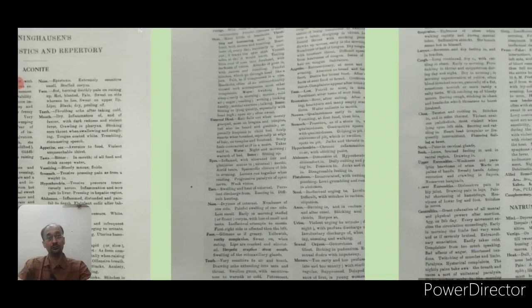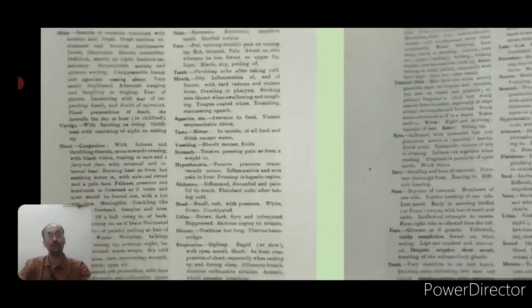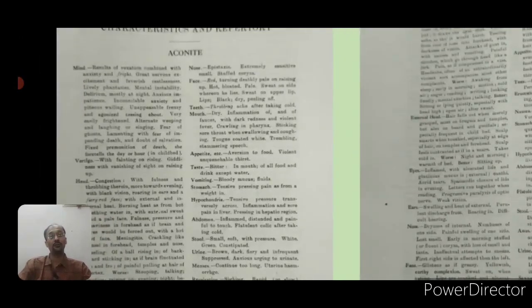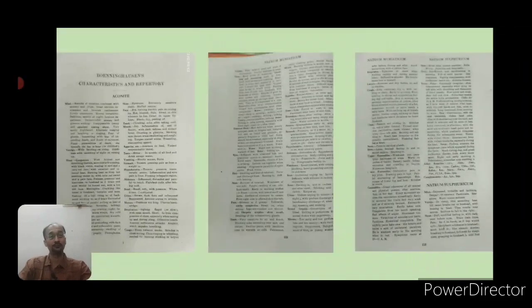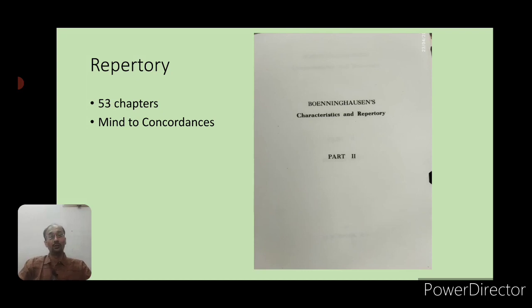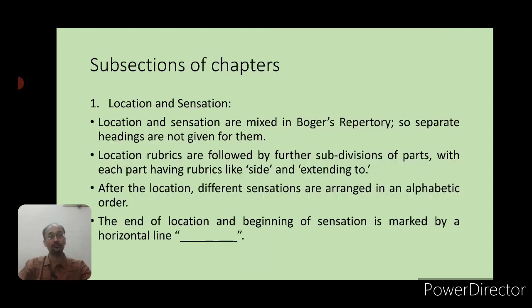The materia medica portion has every medicine divided into sub-chapters or sub-sections starting from mind, vertigo, head, and so on — all symptoms are given wonderfully. The third part, the repertory proper, is considered part two of this repertory. There are a total of 53 chapters; the first chapter is Mind and the last chapter is Concordance. Every chapter has six different sub-sections.